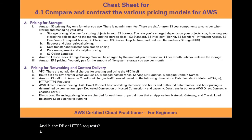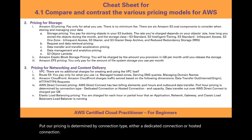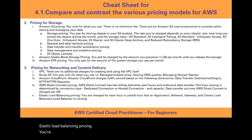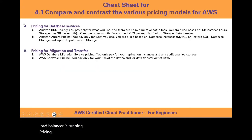AWS Direct Connect has two billing elements: port hours and outbound data transfer. Port hour pricing is determined by connection type — either dedicated or hosted — and capacity. Data transfer out over AWS Direct Connect is charged per gigabyte. For Elastic Load Balancing, you are charged for each hour or partial hour that an application, network, gateway, or classic load balancer is running.